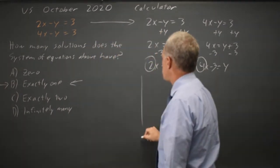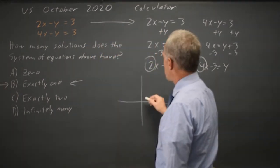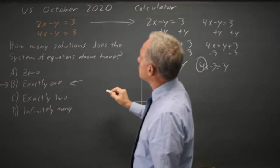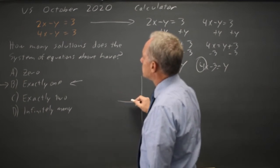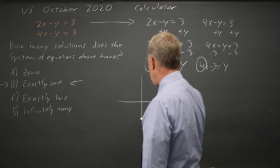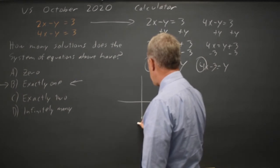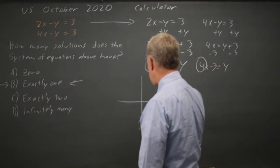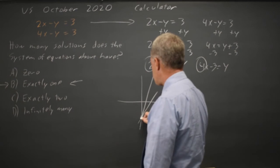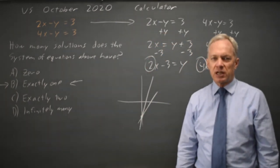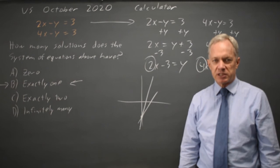Or you can graph them in the plane. They both have, for x equals 0, y equals negative 3, and one has a slope of positive 2, the other has a slope of positive 4. They intercept only at the y-intercept and have exactly one point of intersection.